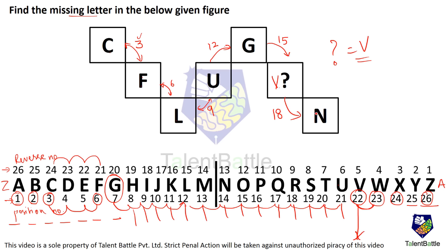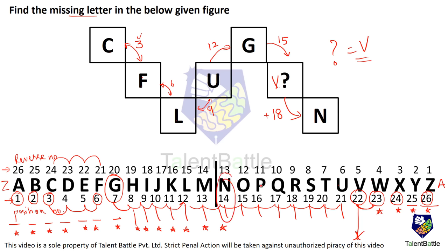Checking from V, counting 18 steps: 1, 2, 3, 4, 5, 6, 7, 8, 9, 10, 11, 12, 13, 14, 15, 16, 17, and 18 is nothing but N. So this confirms V is correct.